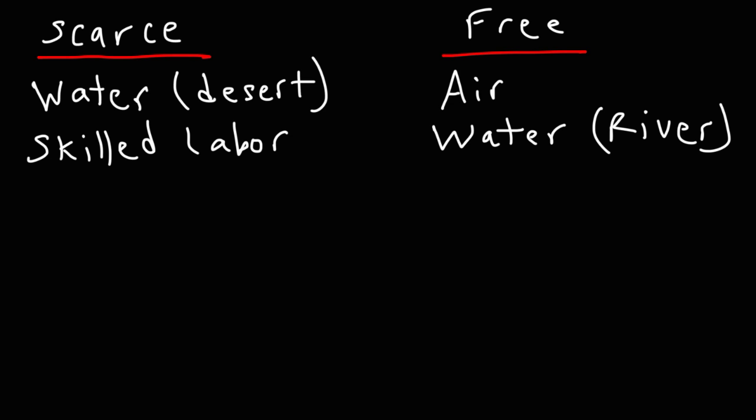Now what about land — would you consider land a scarce resource or a free resource? This too could depend on location. For instance, if you want to buy land in a city, land in the city is very expensive. Imagine buying land in Los Angeles or San Francisco — because so many people live there, the value of land is very high.